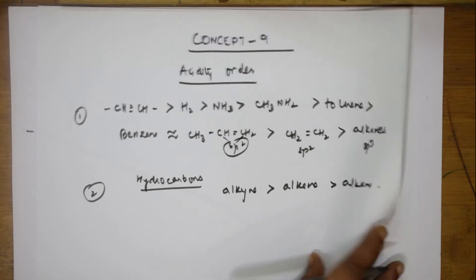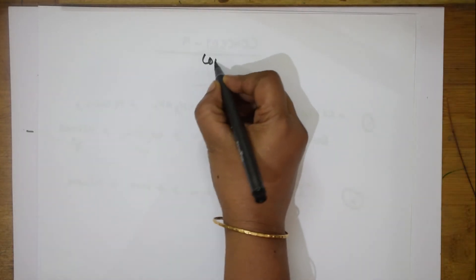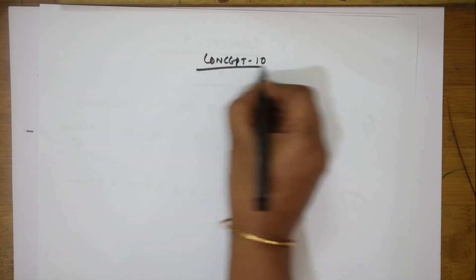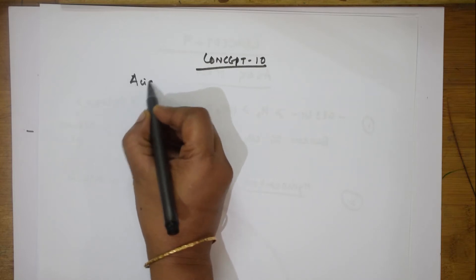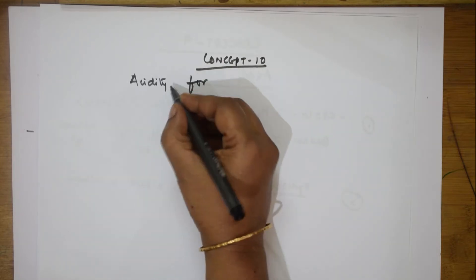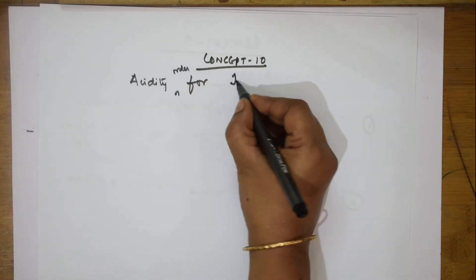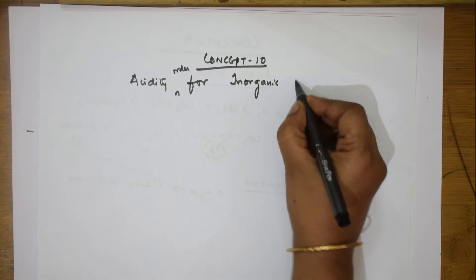Let us come to concept 10. In concept 10, we will take different combinations. Suppose they give you a combination of inorganic acids — like sulfuric acid, sulfurous acid, nitrous acid, hypochlorous acid — the oxy acids. For acidity order of inorganic oxy acids, you need to remember one concept: increase in oxidation number of the central atom increases acidic nature.